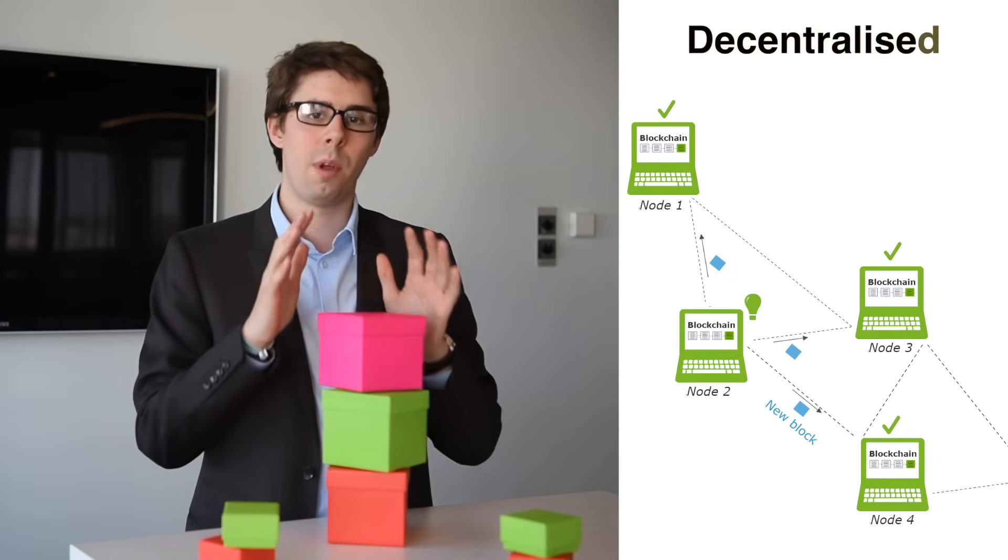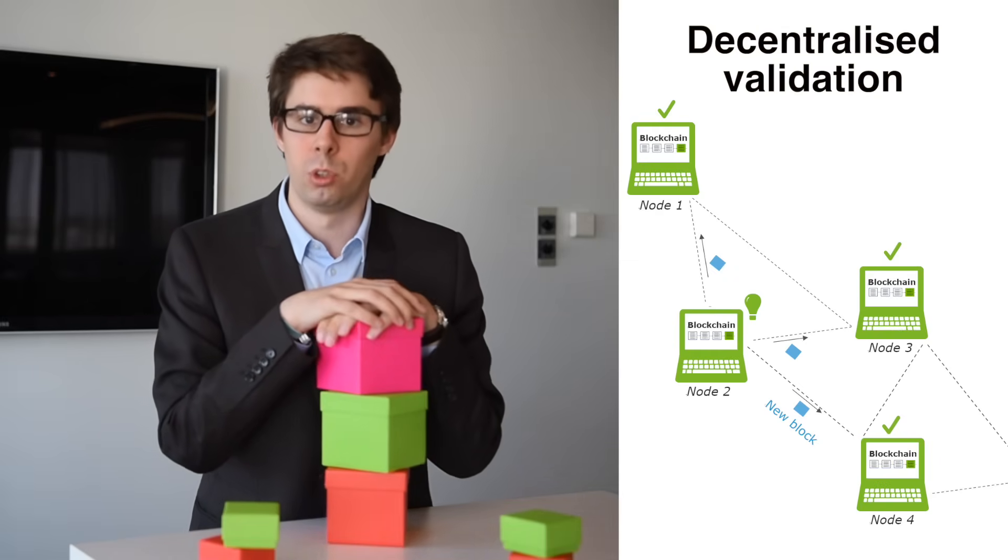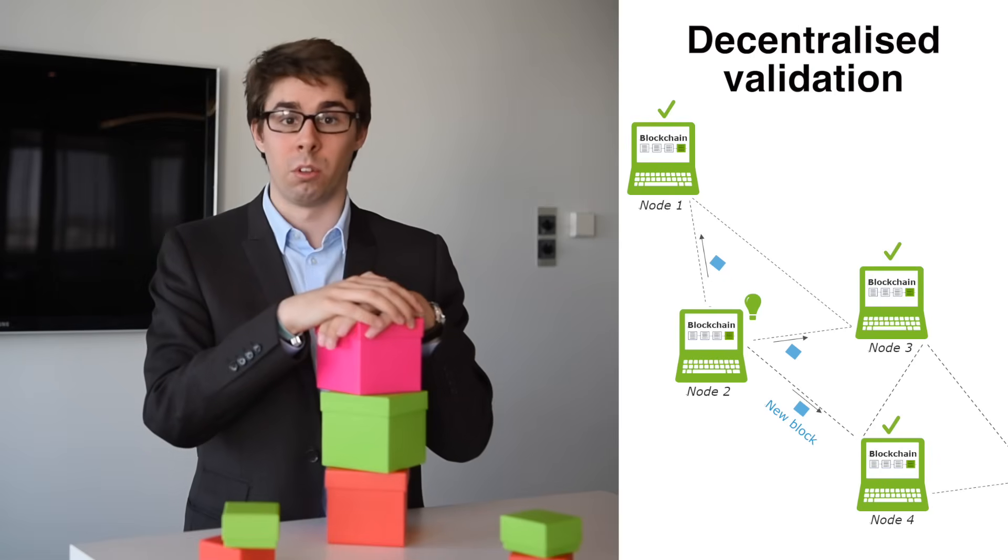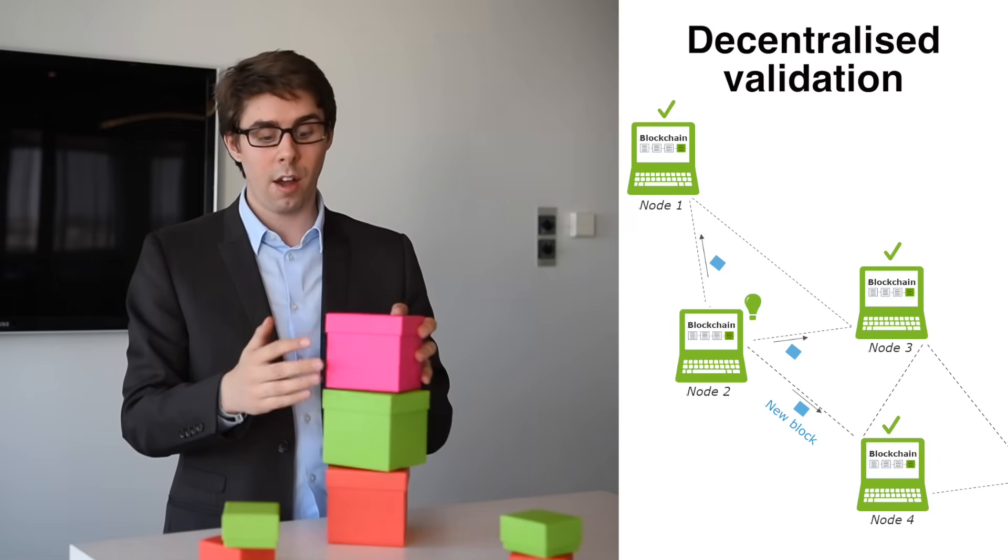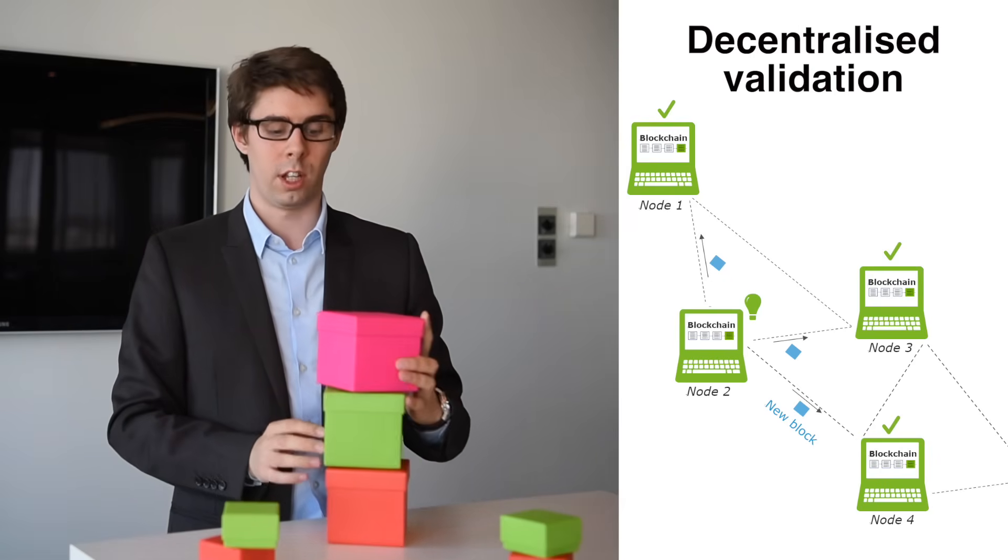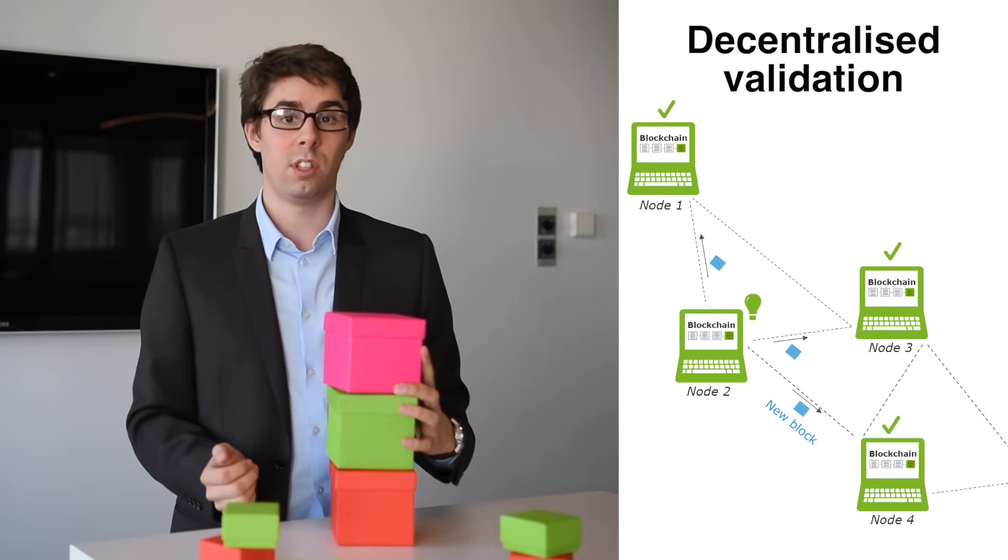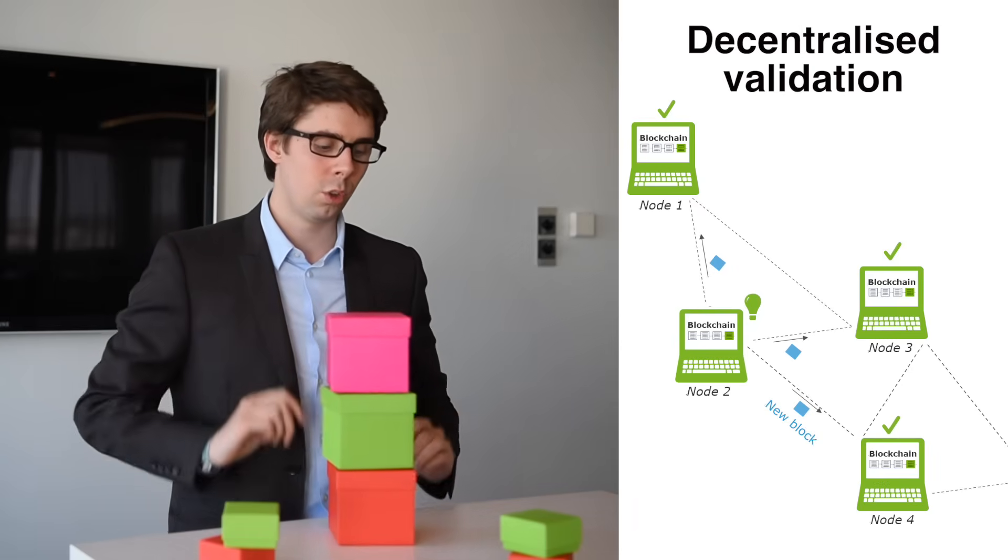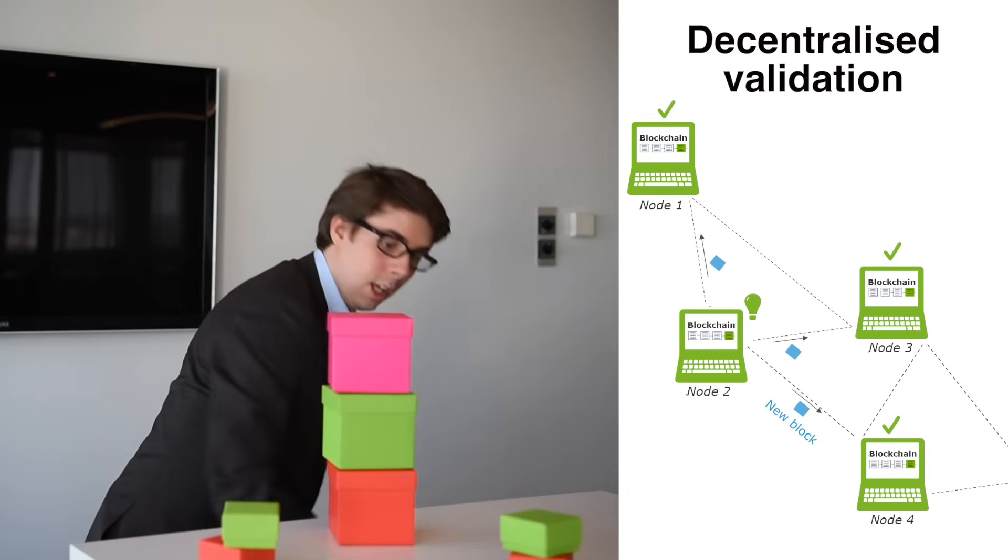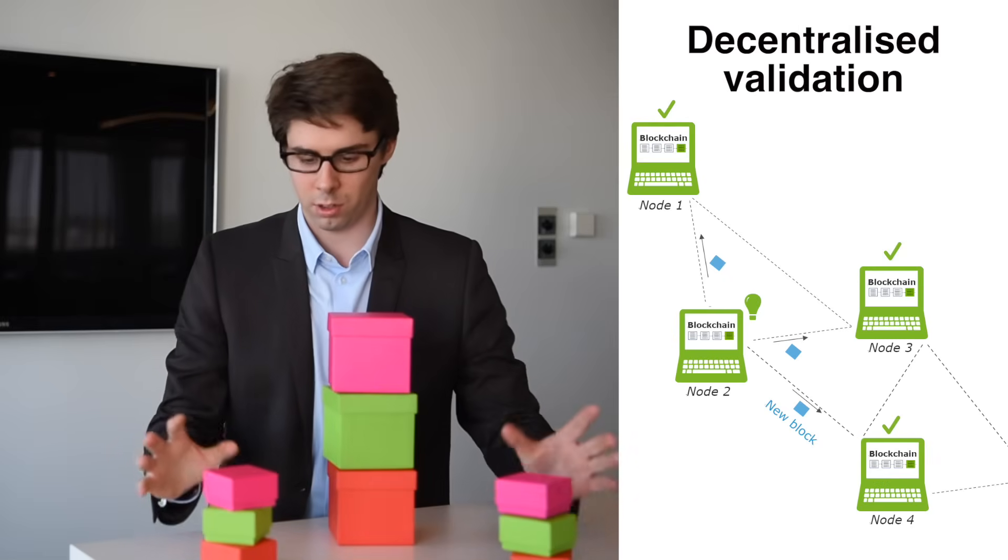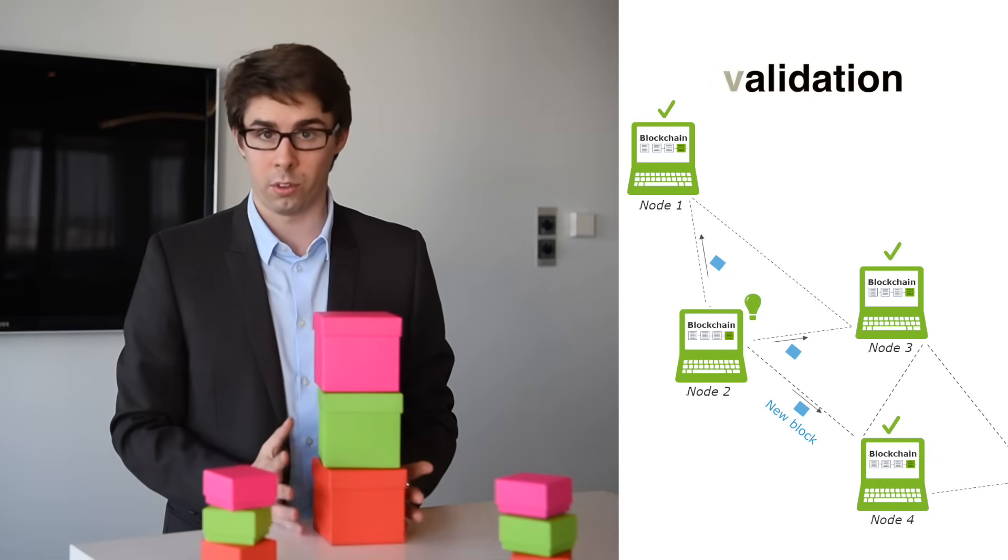But before other people validate the block, they will have a look and they will say, but does Bob even own 1 Bitcoin? Can he spend 1? And therefore they will have a look at the previous blocks in the network. And they will realize that in this block, block number 1, Bob received 3 Bitcoins from Jean-Luc. So it's okay for him to spend 1 Bitcoin. And they will immediately accept as well this transaction on their network.